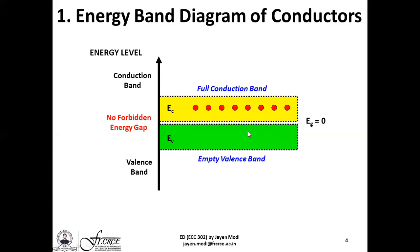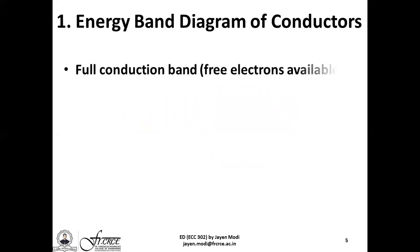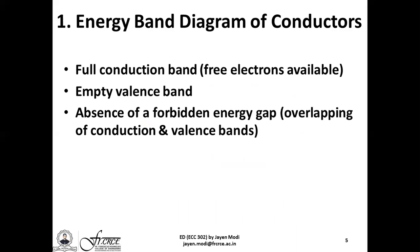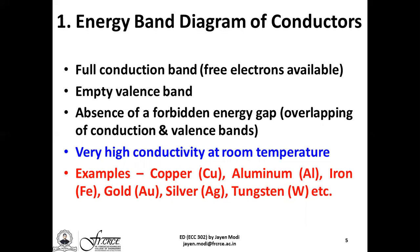On the other hand, the valence band is completely empty — there are no free electrons available. My simple definition of conductors would be: conductors are those materials which easily allow the passage or flow of electric current through them. Conductors have a full conduction band with plenty of free electrons, an empty valence band, and the absence of a forbidden energy gap causes conductors to have a very high degree of electrical conductivity even at normal room temperatures. Examples of conductors include copper, aluminum, iron, gold, silver, tungsten, etc.